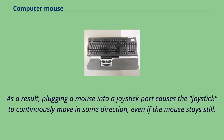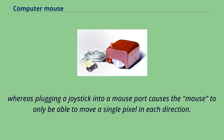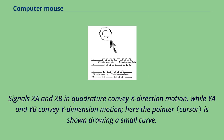Plugging a mouse into a joystick port causes the joystick to continuously move in some direction even if the mouse stays still, whereas plugging a joystick into a mouse port causes the mouse to only be able to move a single pixel in each direction. Signals PSI and XP in quadrature convey X-direction motion, while Y and B convey Y-dimension motion.